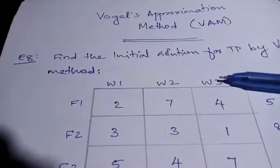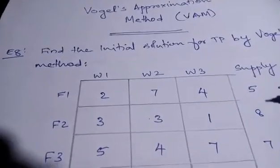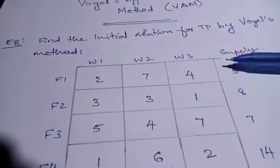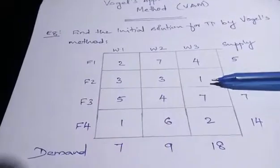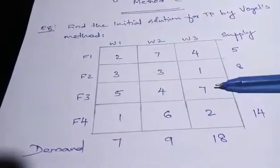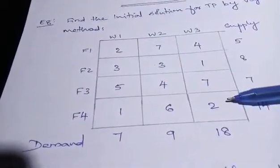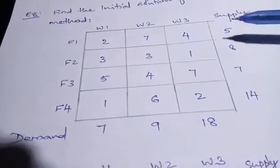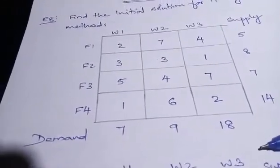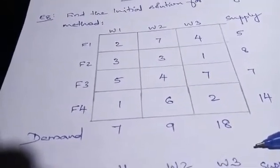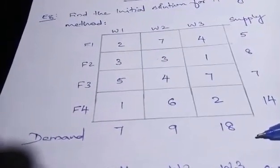In this case, something different we are doing. You will have a table which gives you the cost of a particular source to destination, along with supply and demand — same as before. The key difference is that here we have to find the penalty.